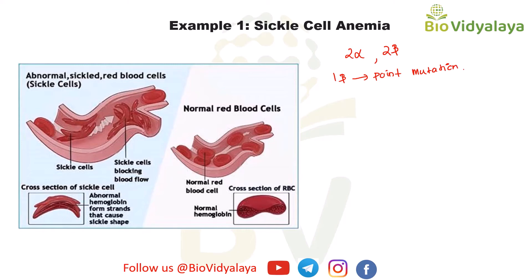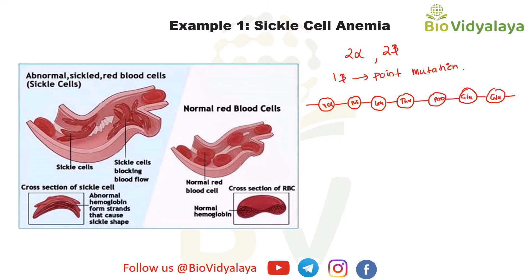Sickle cell anemia is an autosomal recessive mutation. The normal amino acid sequence in the beta chain at positions 1 through 7 is: valine, histidine, leucine, threonine, proline, glutamic acid, and glutamic acid. In the case of sickle cell anemia, there is a point mutation in the beta gene at the sixth position.